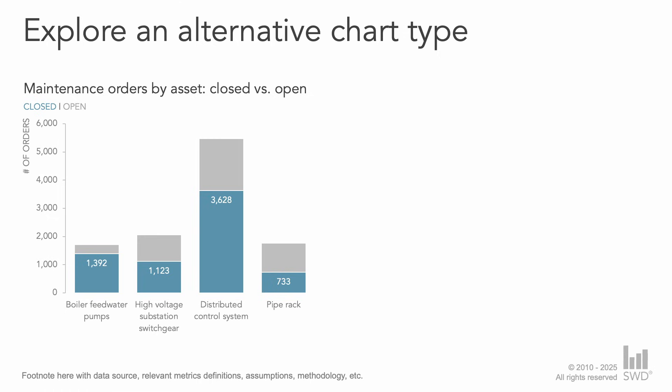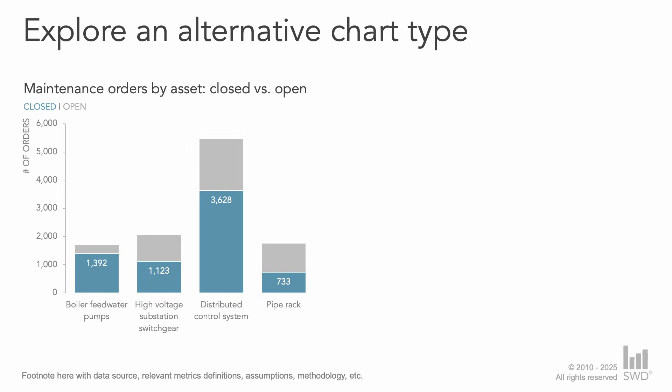But in conversation with colleagues we determined that what our audience cares about above all else is the closure rate within each individual asset type. With that original visual and the closure rate priority in mind, I'm inclined to explore one final view — switching to a 100% stacked bar chart, now clearly showing the proportion of orders that have closed.